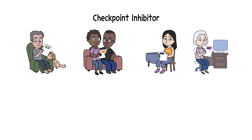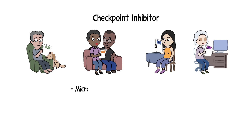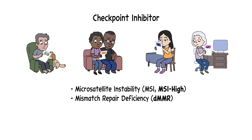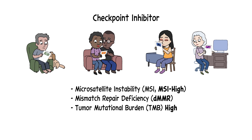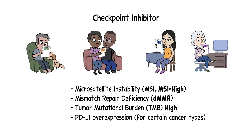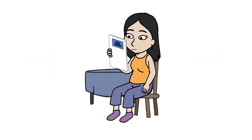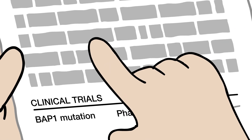These biomarkers include microsatellite instability status, also called MSI or MSI-high; mismatch repair deficiency, or dMMR; tumor mutational burden, or TMB-high; and for certain types of cancer, PDL1 overexpression. Your results summary will likely also include a list of clinical trials that may be appropriate for you based on your biomarkers.